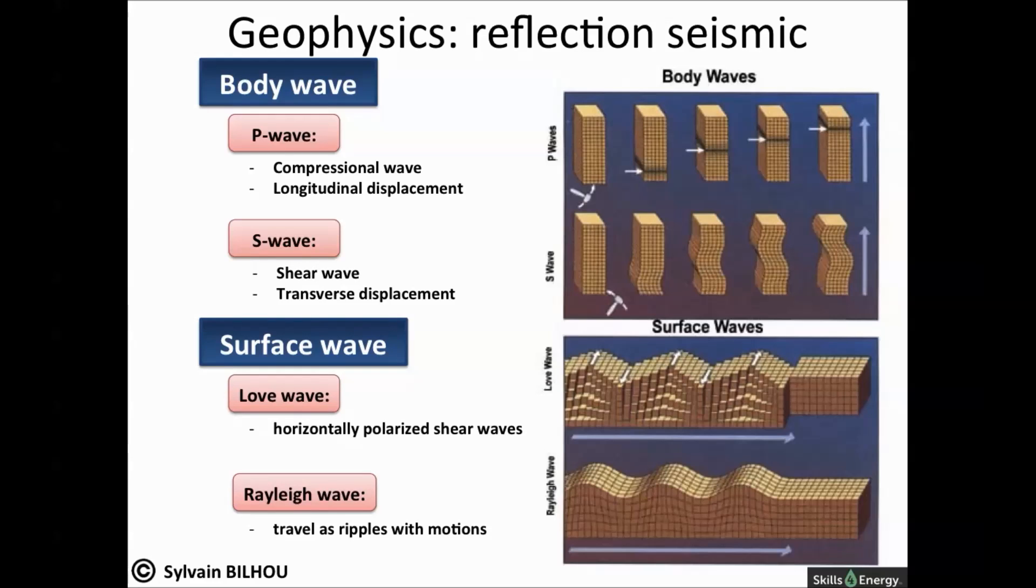Surface waves are also detected. Love waves, which are horizontally polarized shear waves, and Rayleigh waves, which travel as ripples with motions such as shallow marine waves.